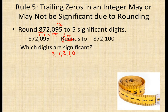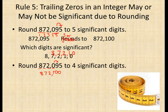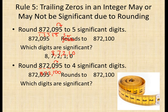Now let's take the same number and round it to four significant digits. Our first through fourth significant digits are 8, 7, 2, and 0. The 9 makes that zero a 1, we put zeros on the end, giving us 872,100 — exactly the same number as before.